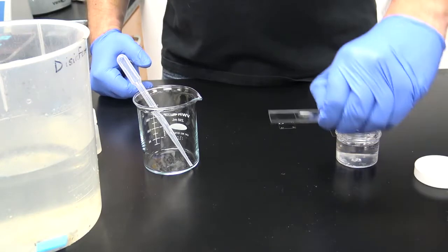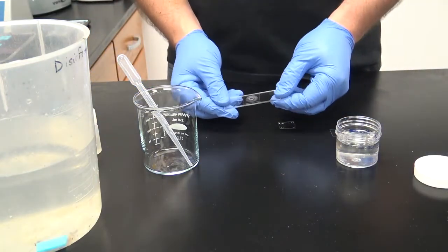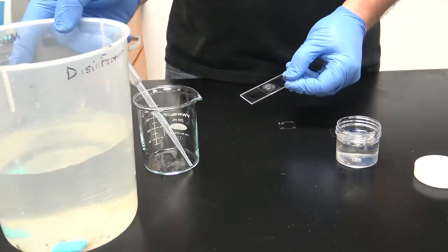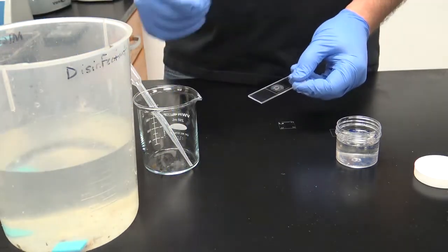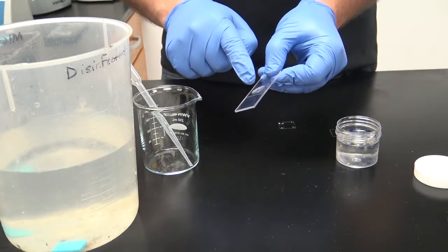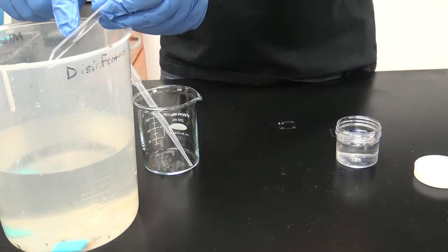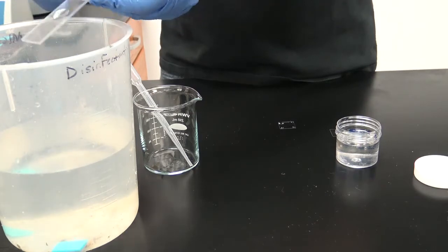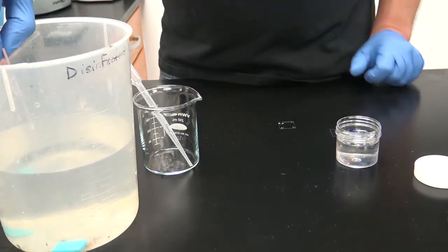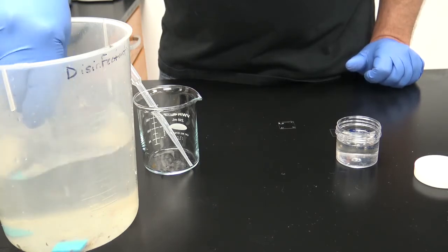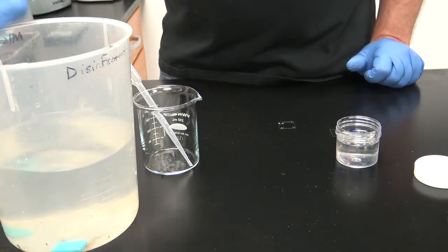Once you have finished looking at your hanging drop slide, you're going to go over to the sink where you'll see a bin resembling this. You will carefully push off your cover slip into this bin and swish your hanging drop slide in the disinfectant. Once you have finished doing this, wash your slide off with soap and water and reuse it.